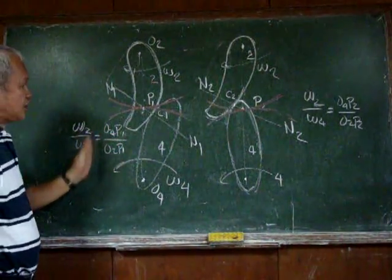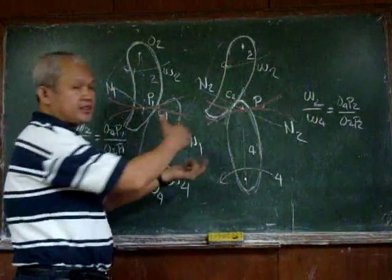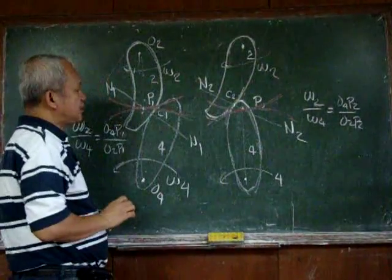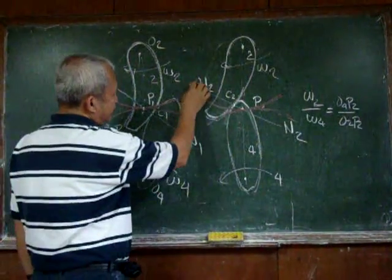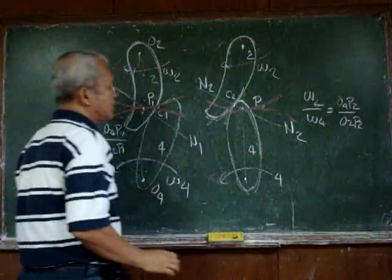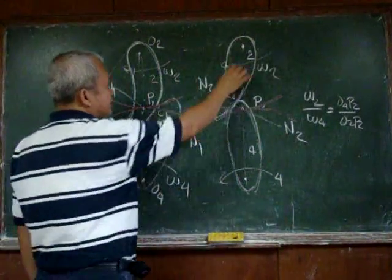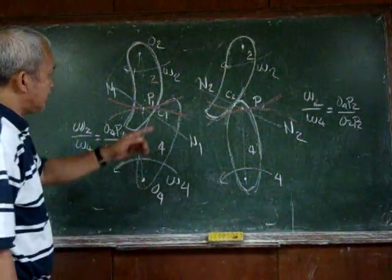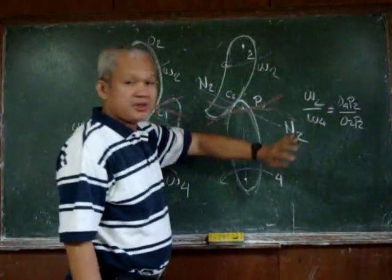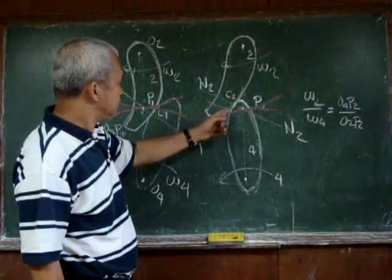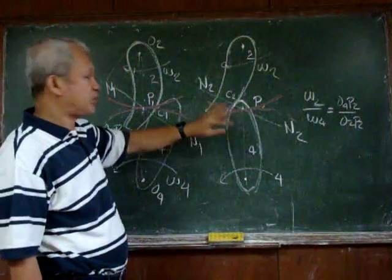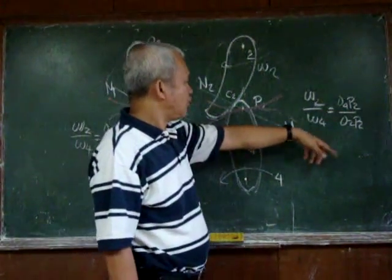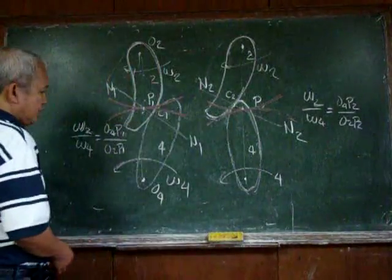In the other position, the bodies have changed position and there is a new point of contact C2, and there is still a common normal. The common normal now still intersects the line of centers at point P. Again, it can be shown that omega 2 over omega 4, or the ratio of the rotation of the two bodies, is just equal to O4P2 over O2P2.